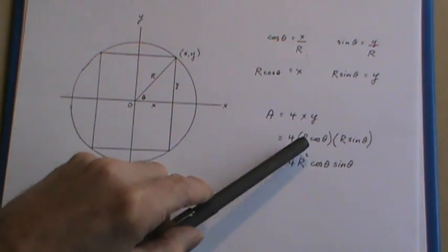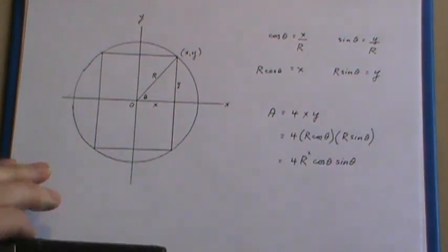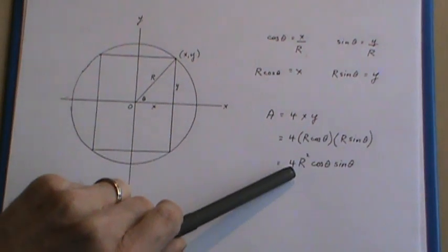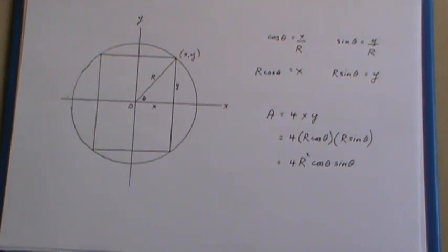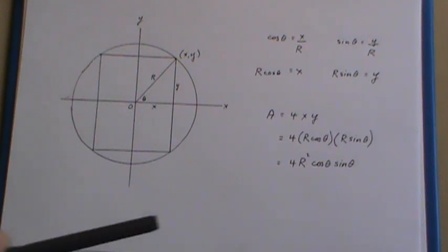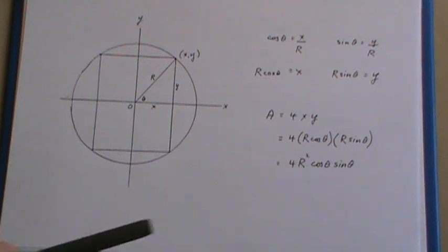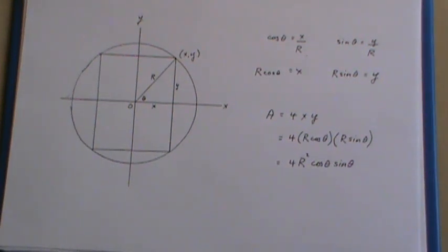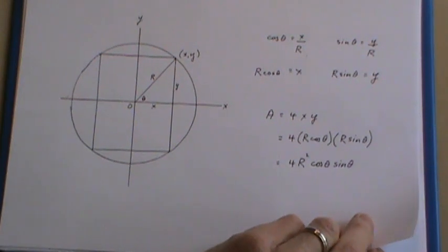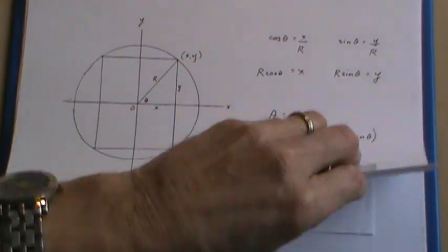And when I put those substitutions in here I've got 4R²cosθsinθ. Now there are several ways to proceed from here. I've seen some solutions where they split the 4 into 2 times 2 and use 2cosθsinθ and rewrite that as sin2θ using a double angle formula. You can go that way or the way I did it I just left it the way it is.